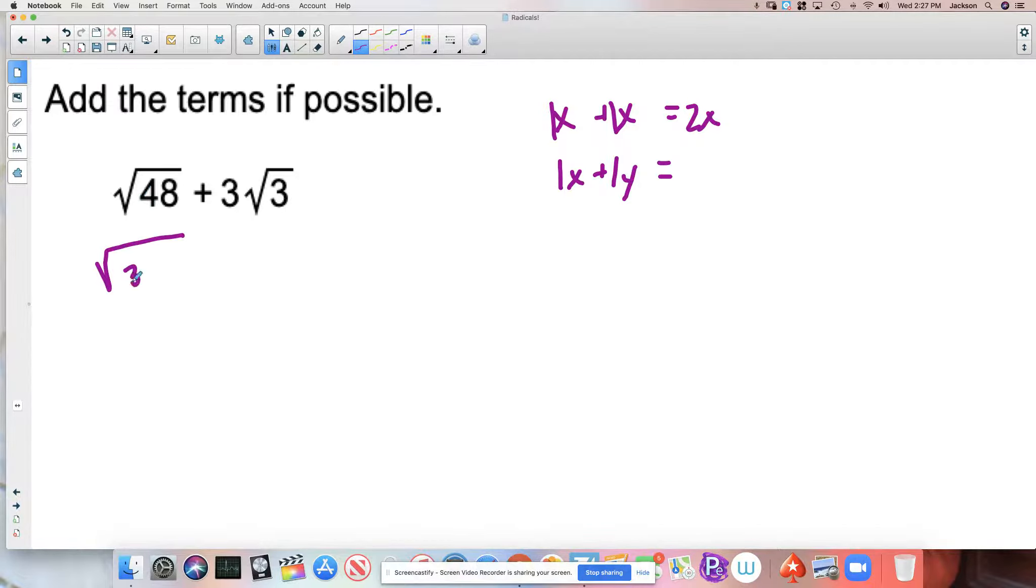Okay, 48 is 3 times 16 or 16 times 3, however you want to write that. I'm just going to keep writing this 3 radical 3 over here. There's nothing to simplify with this. And this 3 is attached to this radical 3. That's worth noting.